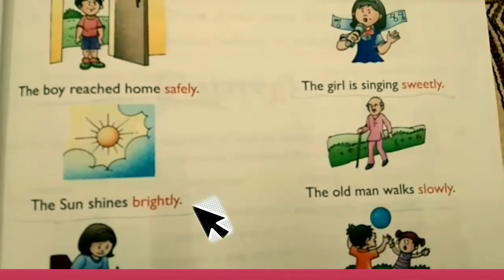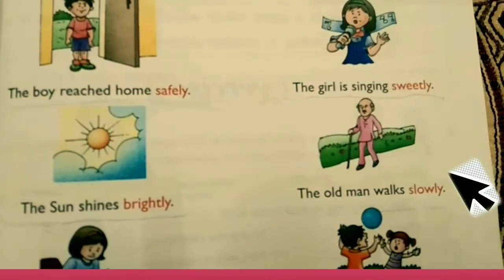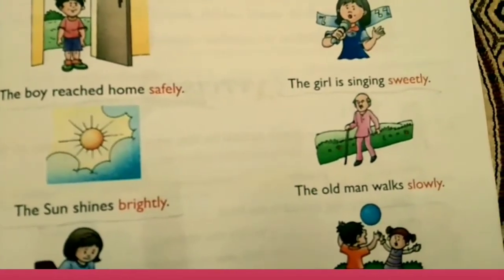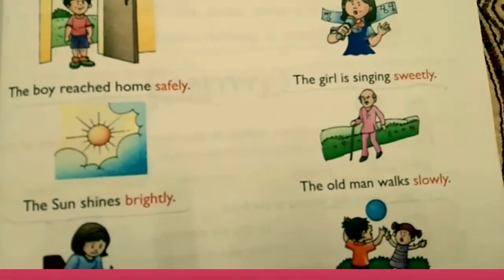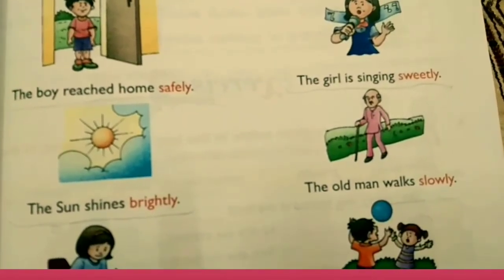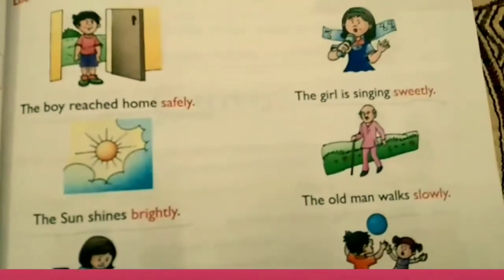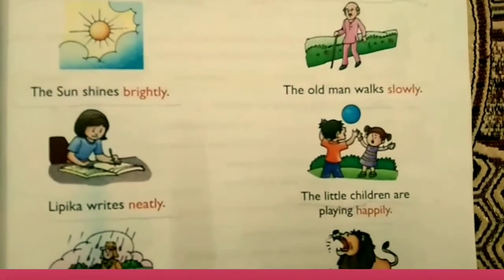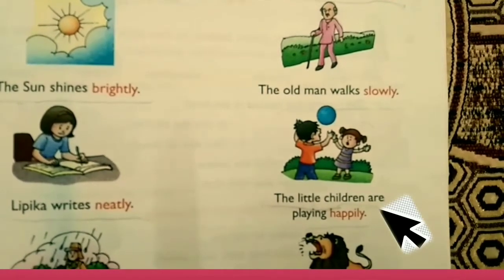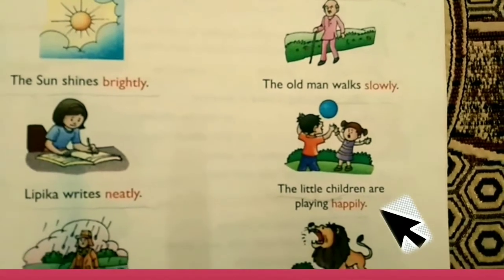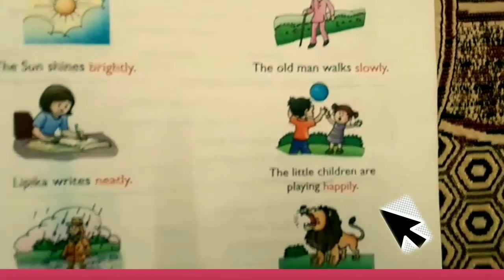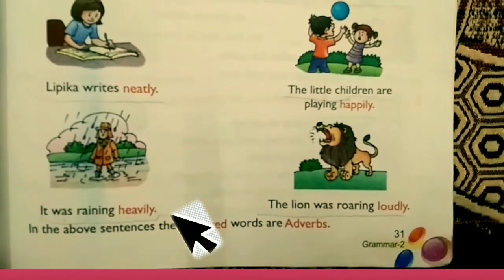The boy reached home safely. The girl is singing sweetly. The sun shines brightly. The old man walks slowly. Safely is an adverb. Sweetly is also an adverb. Boy is a noun, reached is a verb, and safely is an adverb. Lipika writes neatly. The little children are playing happily. Playing is a verb and happily is an adverb.